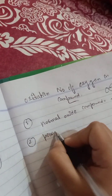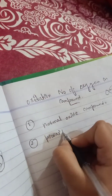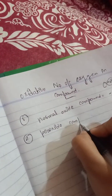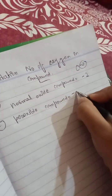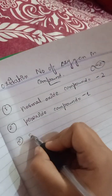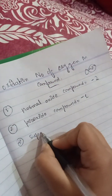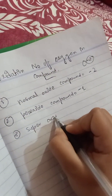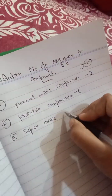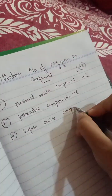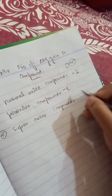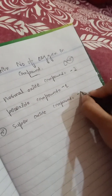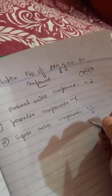Second, we have the peroxide compound. Peroxide means half of the normal oxidation number of oxygen, which means minus one. Third, we have the superoxide compound, which is less than the peroxide — half of minus one, which means minus one over two.